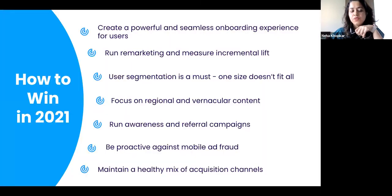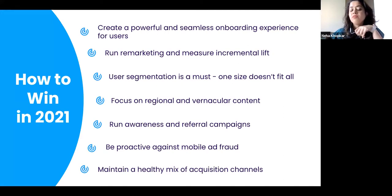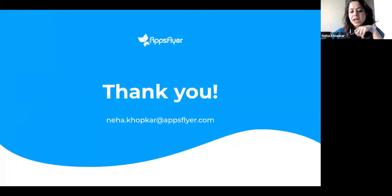Looking ahead into 2021, a few quick tips to improve app retention and uninstall rates: focus on the onboarding experience of users; measuring remarketing lift can really help; focus on regional and vernacular content; build brand campaigns alongside your performance campaigns to add that additional spark to your growth; be proactive about mobile fraud; and maintaining a healthy mix of acquisition channels is absolutely key. On that note, I'd like to hand it over to Manu to share how to diversify your user acquisition strategy for growth.